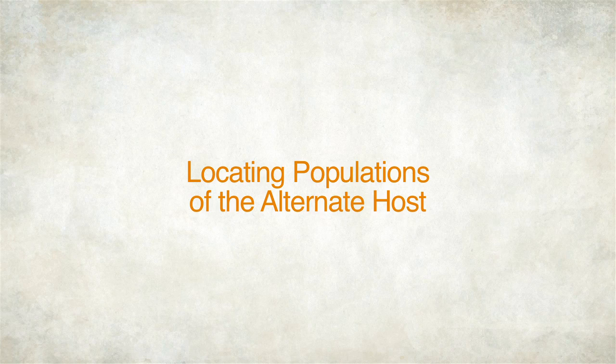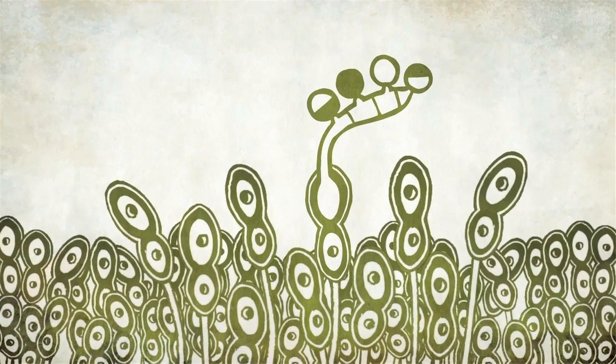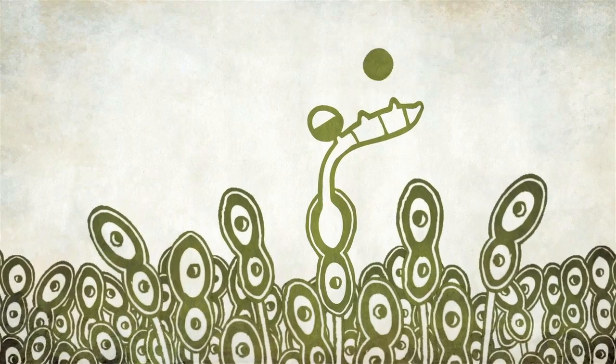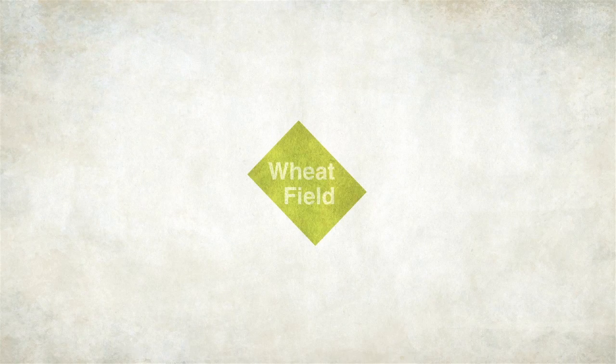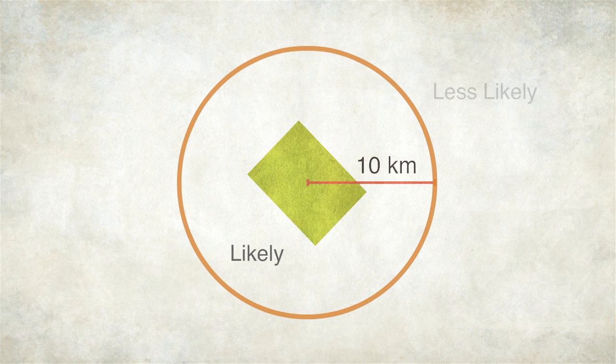Where should we look for alternate hosts? Recall from the pathogen lifecycle that the only spore that can infect the barberry host group is the basidiospore. Relatively small and thin-walled, basidiospores are prone to rapid desiccation in many environments and are therefore believed to remain viable only over short dispersal distances. Thus one is unlikely to find cereal rust infection on barberry plants growing 10 or more kilometers from cereal hosts. This is a general requirement of proximity that can help prioritize surveillance efforts.